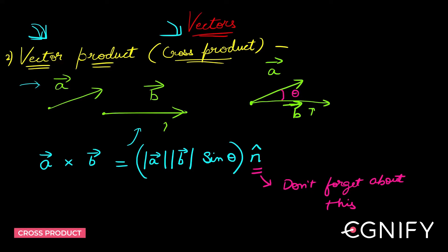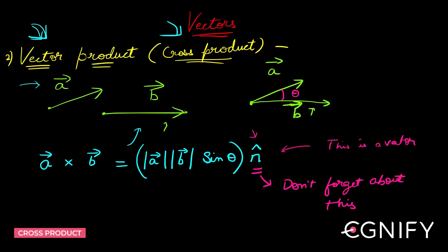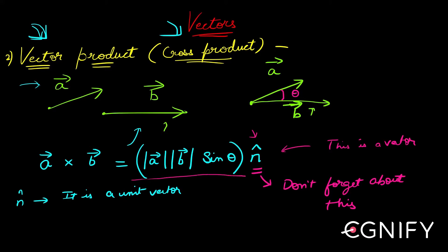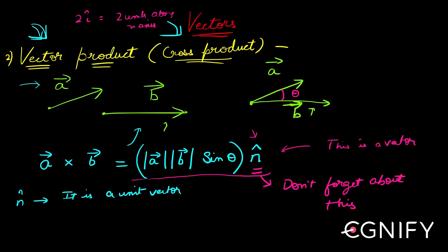Now let's see what n cap is. If something has a cap, that means it is a vector — just like i cap, j cap, k cap are unit vectors in some direction. N cap is also a unit vector. So the entire expression a|b|sin theta n cap is a vector, because we are multiplying a scalar quantity — a, b, sin theta are all scalars — by a unit vector n cap. So we get a vector as output.